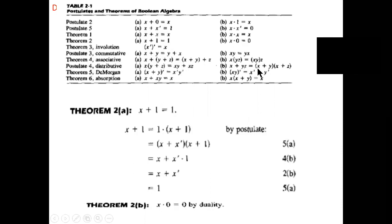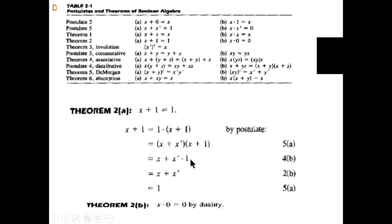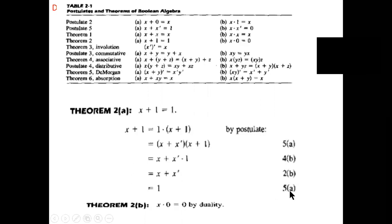Postulate 4b states: x plus yz equals (x plus y)(x plus z). I am taking x as common. That is x dot (x' dot 1), converting this into that form. Then again simplifying using 2b. Postulate 2b is x dot 1 equal to x. This gives x' and x plus x' equal to 1 using φa.